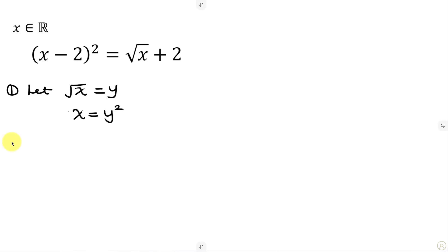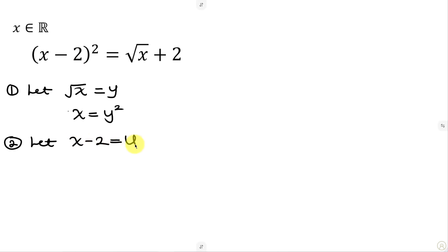For the second substitution, we let what's inside the parenthesis — which is x minus 2 — be equal to u. Making x the subject, x will be equal to u plus 2, as the 2 crosses to become positive. So this is our second substitution.